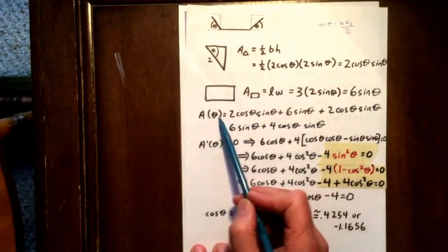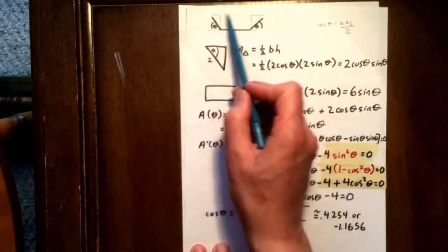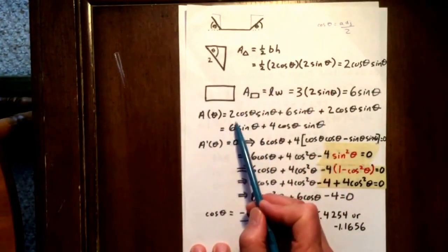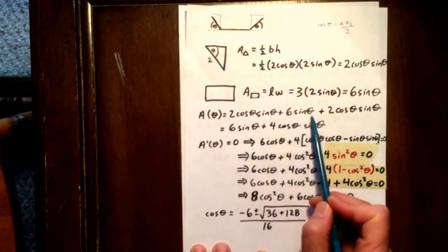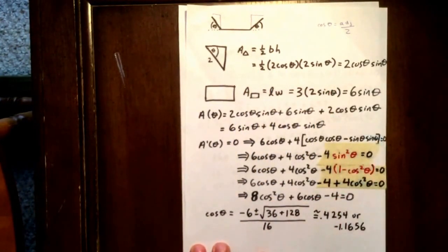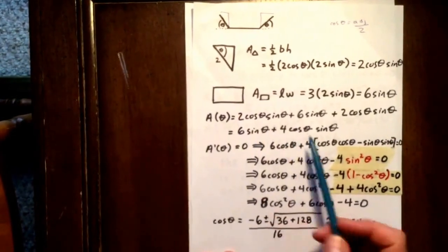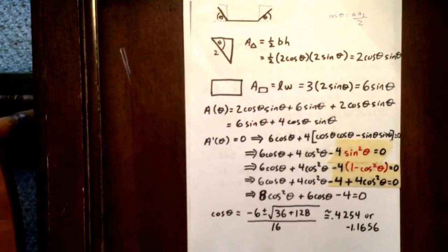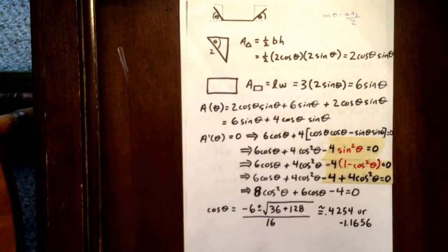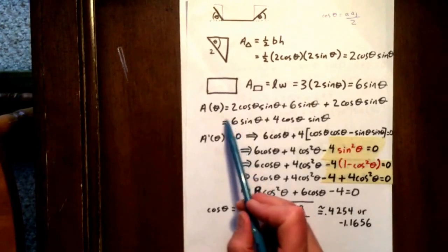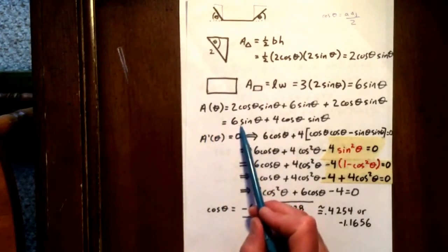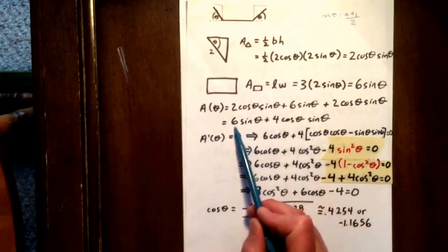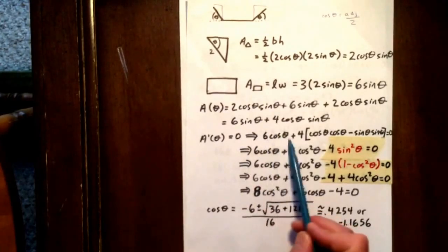The area of the whole trapezoid is 1 triangle plus 1 rectangle plus 1 triangle. In other words, 6 sine theta plus 4 cos theta sine theta. Now, instinctively, we can see that we should take the derivative. The derivative of 6 sine theta is 6 cos theta.